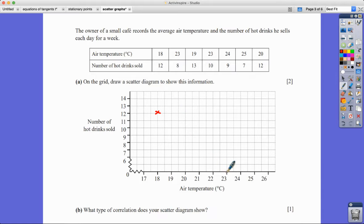On the next day it was 23 degrees Celsius and eight drinks were sold. And on the next day it was 19 degrees Celsius and 13 drinks sold. The next one it was 23 again and 10 drinks sold. And 24 degrees on the next day and nine drinks sold. You can see some sort of pattern emerges. At 25 degrees Celsius, seven drinks were sold. And then we've got 20 degrees Celsius and 12 drinks sold.